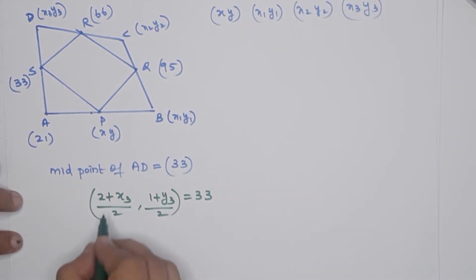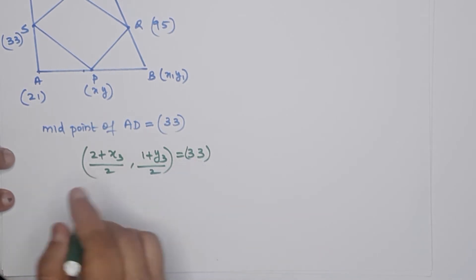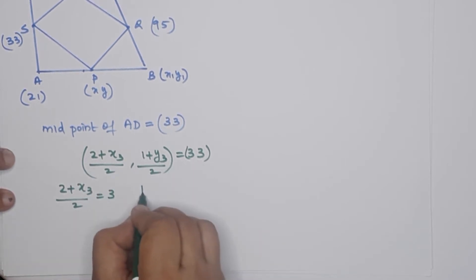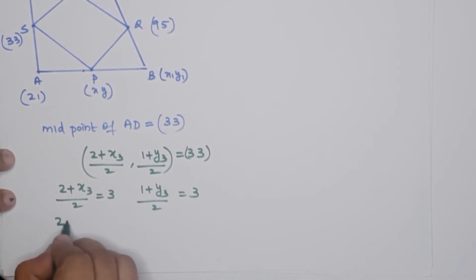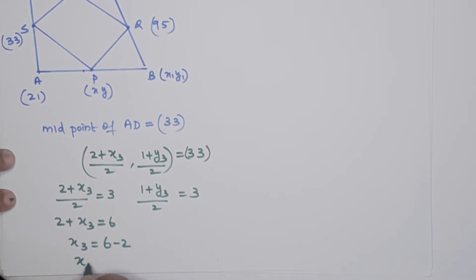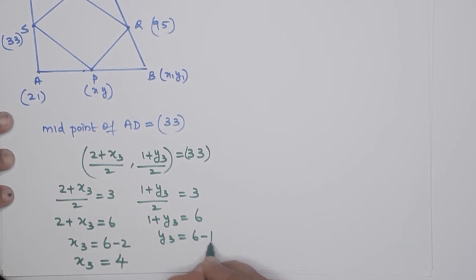So, looking at the x-coordinate: 2 plus x3 over 2 equals 3, therefore 2 plus x3 equals 6, so x3 equals 6 minus 2, which gives x3 equals 4. Similarly, 1 plus y3 over 2 equals 3, so 1 plus y3 equals 6, giving y3 equals 5.